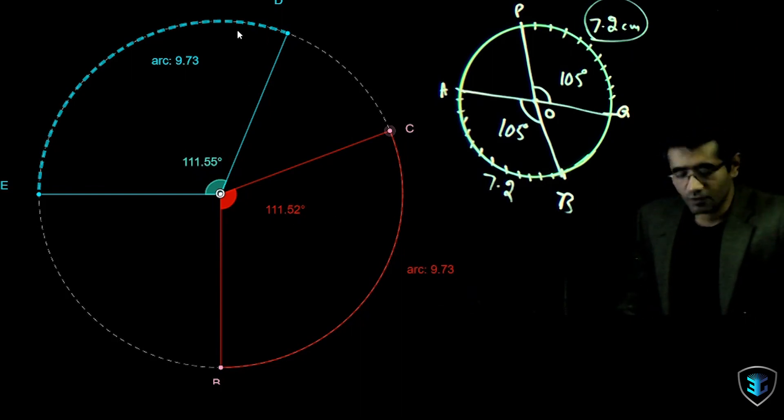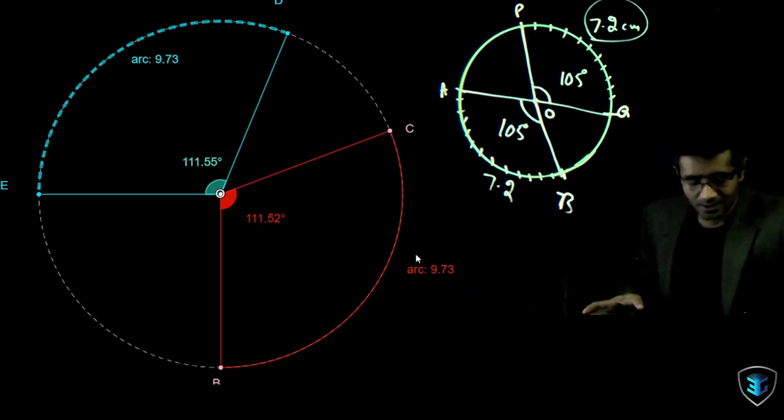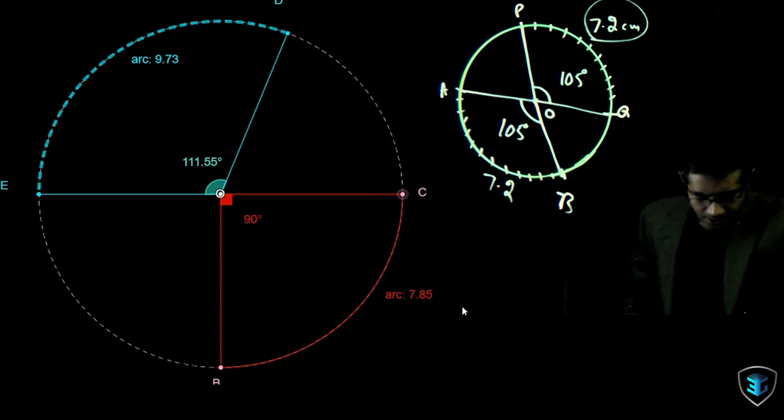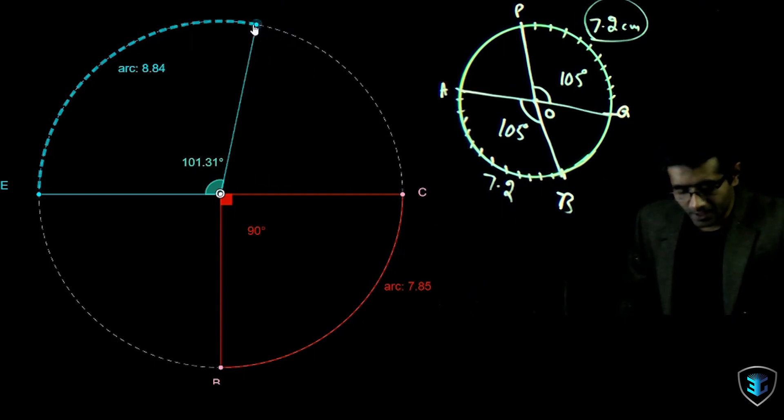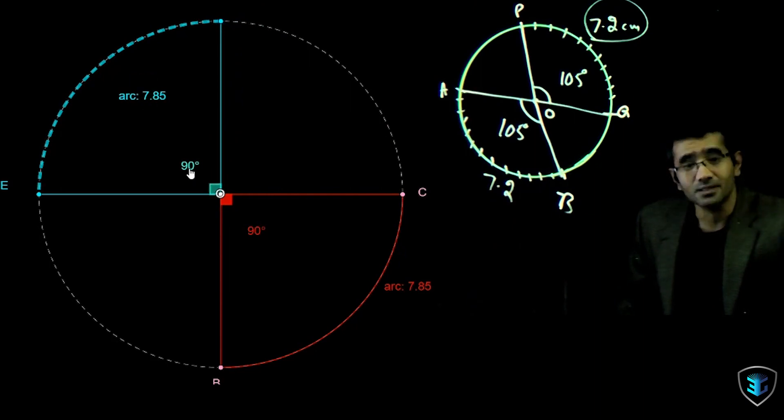So I can be very clear now, if the arc lengths are equal then the angles at the center would be equal. Now these are the arcs of the same circle, and the arcs are called congruent because their lengths are equal. Let's take another example and check. If I move it till here, I can see that arc is 7.85 and the angle here is 90 degrees. So let's move this one also and see what's happening. I have the arc length to be 7.85 again, and the angle is 90.